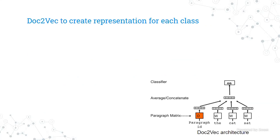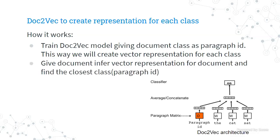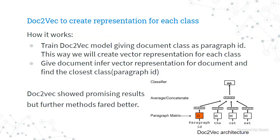We quickly tried to find another approach. We used Doc2Vec to create a representation for each class. Doc2Vec is like Word2Vec but creates a representation for each document. In our case, instead of a document ID, we used the class label, so we trained representations per class. When given a new document, we inferred its vector representation and found the closest class in that space. Doc2Vec showed really promising results, but there are better methods.